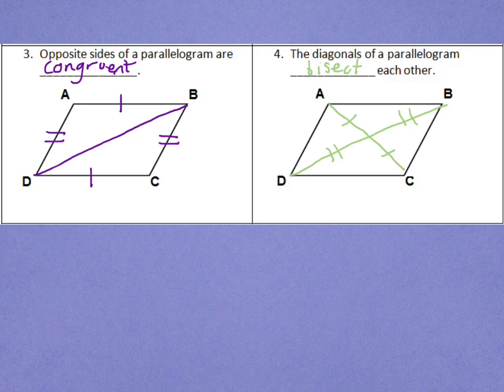This can also be shown using congruent triangles, because I have a congruent triangle up here to this one down here. Or, you could also use the other pair. But, because those triangles are congruent, we know that the diagonals bisect each other. Again, we'll look at that in more detail during class.